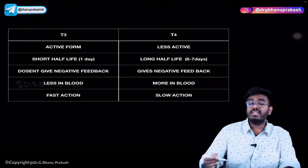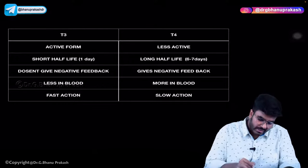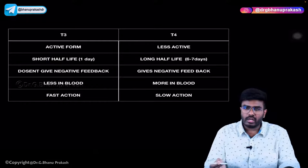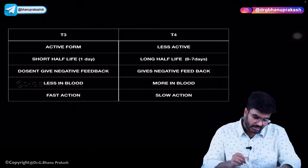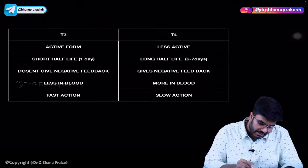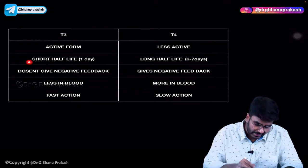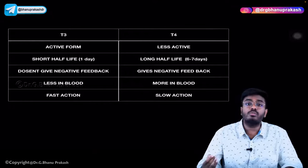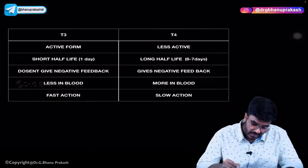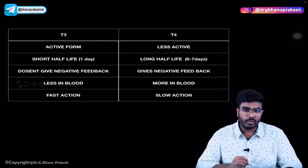Out of T3 and T4, who has a shorter half-life? The active form — T3 — has a shorter half-life of only one day. T3 will be active for only one day. T4 can be active up to six to seven days, almost one week, so T4 has a long half-life.